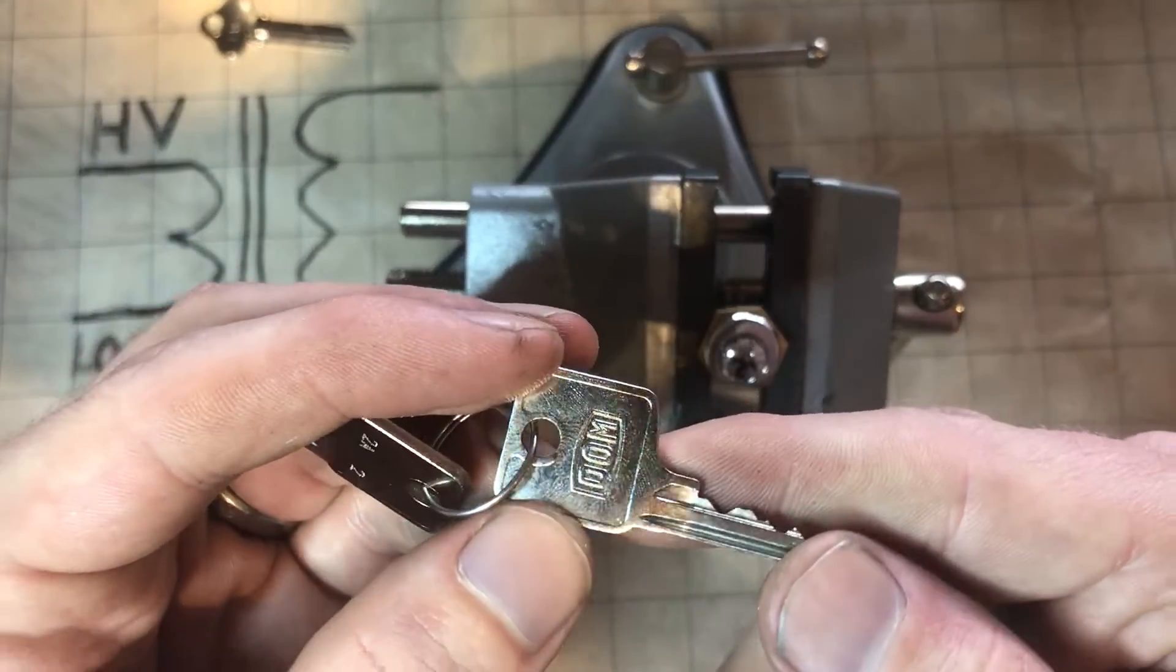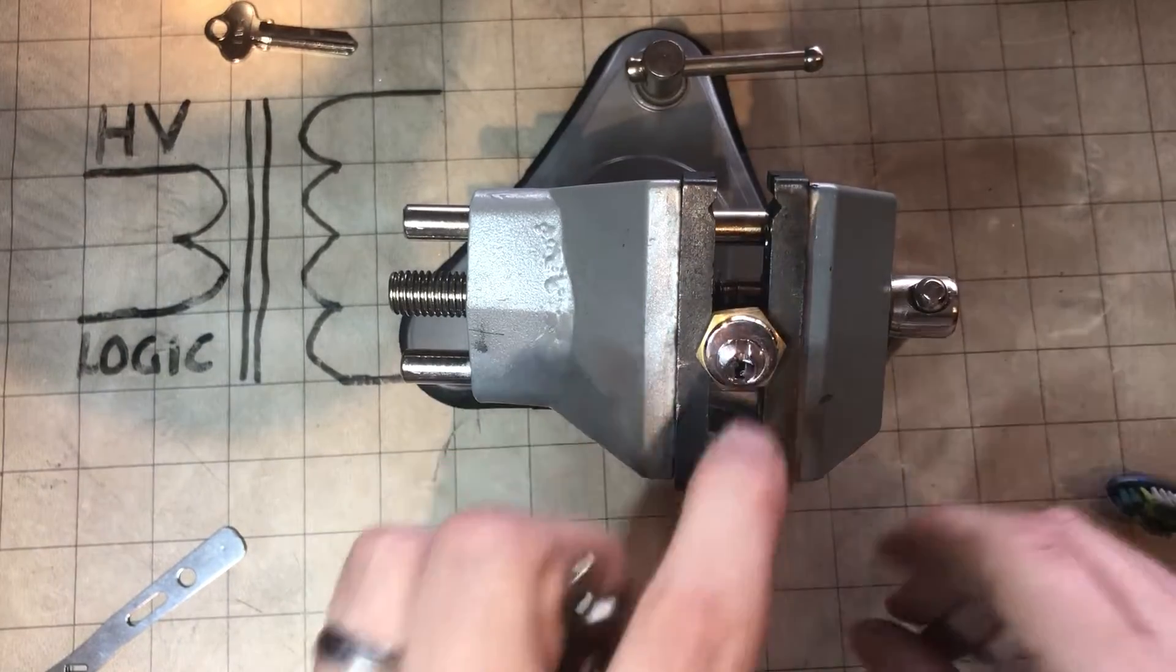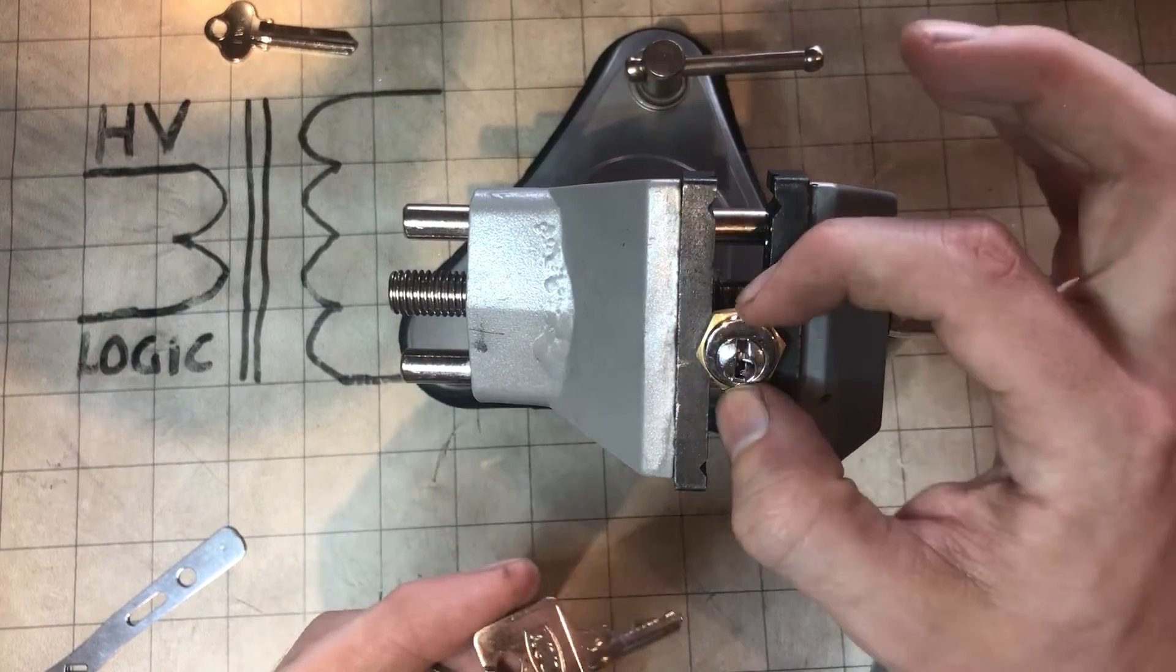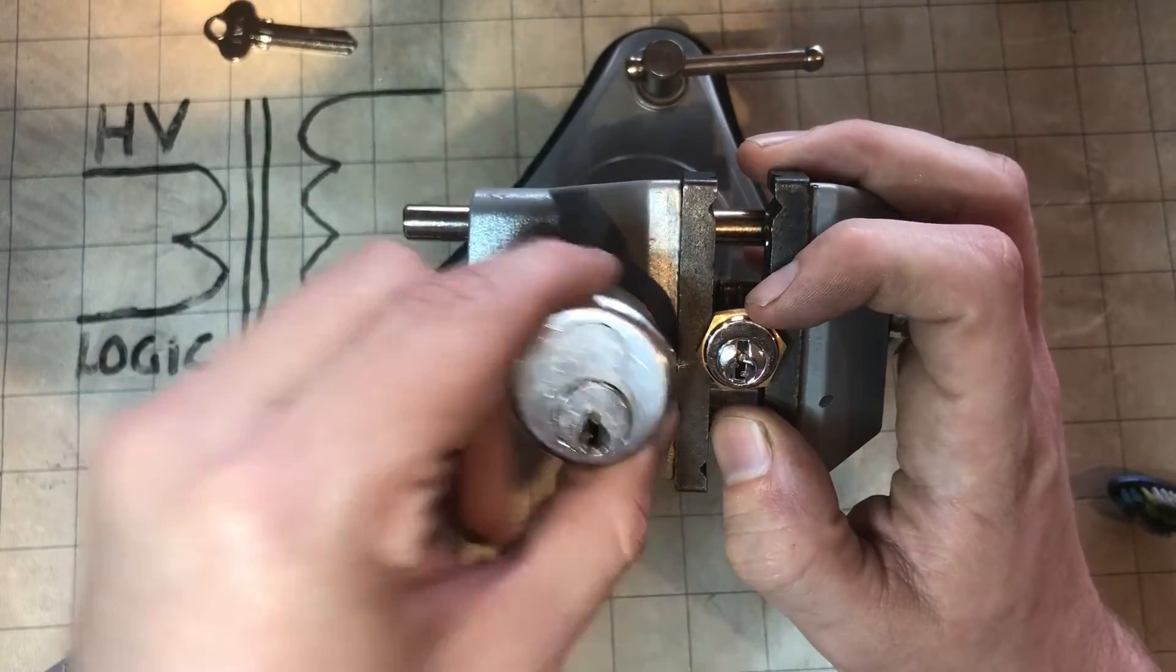Alright, I've got this tiny little Dom cam lock. I've just pulled the cam off so it doesn't get stuck in the vise. As you can see it's very small, it's a real lock in comparison.